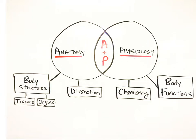Anatomy and physiology are two separate branches of biology that we combine together in this course to better understand how the human body is organized and how it works. Anatomy is the study of body structures, such as tissues and organs, and the relationships between them. Historically, it was first studied through dissection, which is the cutting apart of body structures in order to better understand their relationships. Physiology is the study of body functions and how the structures work together. It involves chemistry and how chemical reactions work in the body's cells and systems.